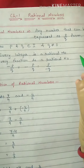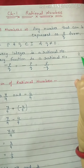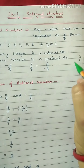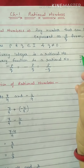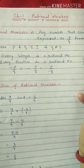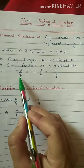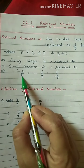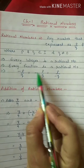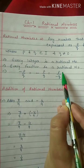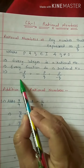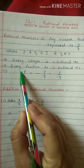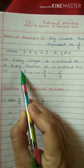Suppose if you have a whole number 2, we can write 2 as 2 by 1 — in the form of P by Q — so it is a rational number. A negative rational number we can write as minus P by Q, or minus P by Q, or P by minus Q. These three are the same meaning, and normally we keep the minus symbol with the numerator.